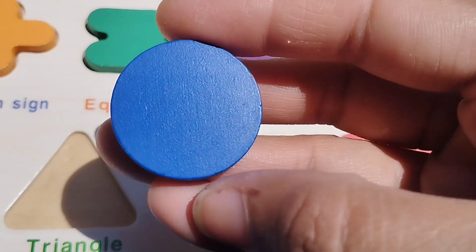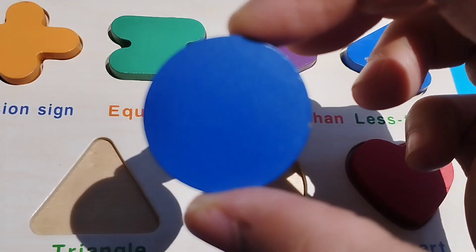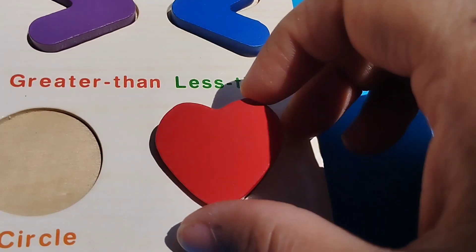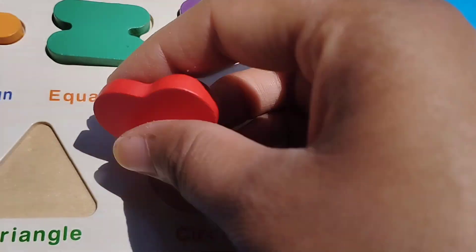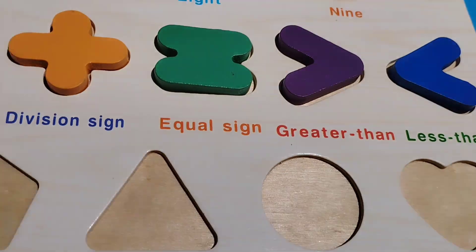The next shape is circle. This is circle shape. The next shape is heart. This is heart shape.